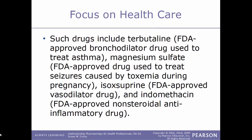Some drugs used to treat preterm labor at the physician's discretion include terbutaline, which is an FDA-approved bronchodilator drug used to treat asthma; magnesium sulfate, approved to treat seizures caused by toxemia during pregnancy; isoxsuprine, which is a vasodilator drug; and indomethacin, which is an NSAID, non-steroidal anti-inflammatory drug.